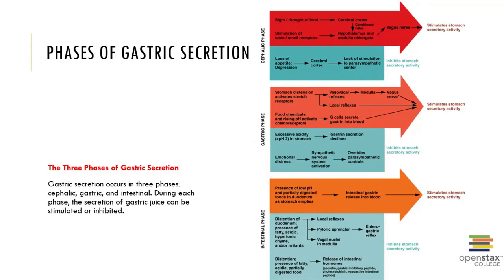This is a really interesting concept that can appear on an exam or even as an extra credit question — the phases of gastric secretion. The nervous system and the endocrine system collaborate within the digestive system, enabling it to control gastric secretions. We can divide this gastric activity into three phases of digestion.